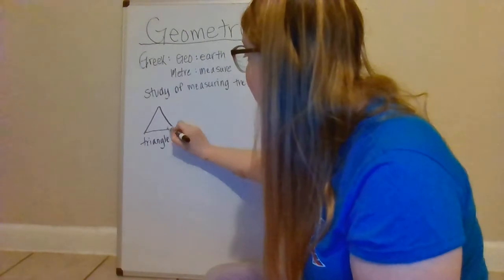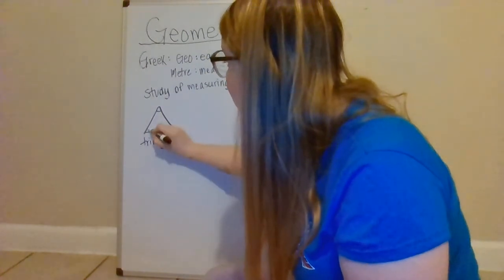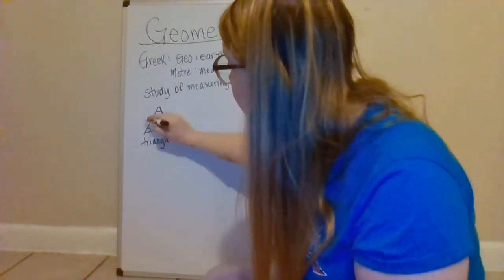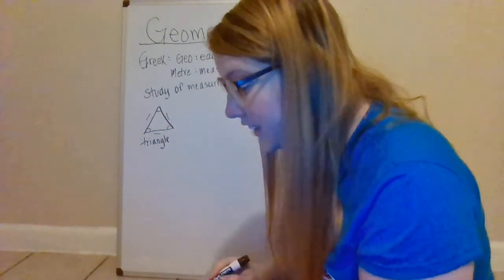So a triangle has one, two, three. These are the angles and one, two, three sides. So that's a triangle.